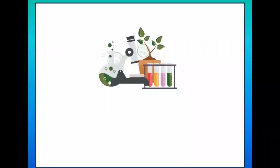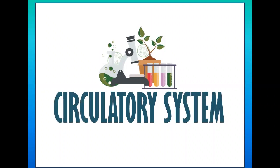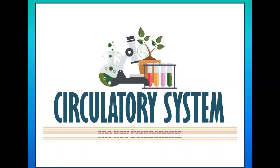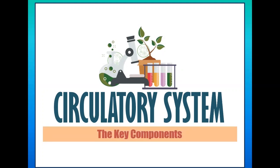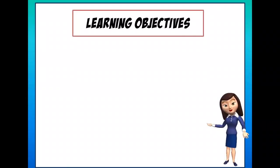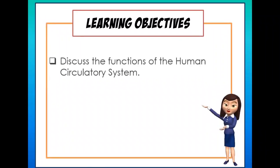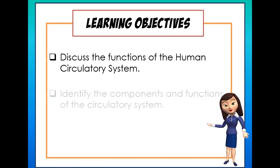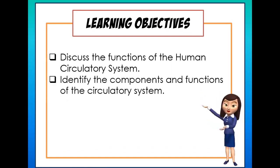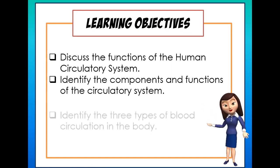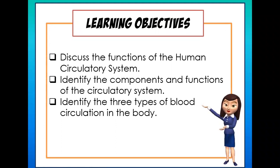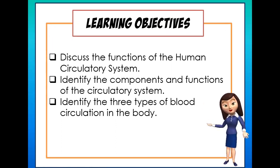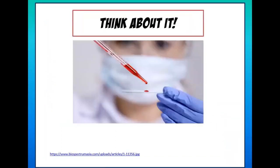Good day class. Today our topic is the human circulatory system, and to be more specific, we're going to talk about the key components. Here are the learning objectives for today's discussion: first, we are required to discuss the functions of the human circulatory system; second, identify the components and functions of the circulatory system; and third, identify the three types of blood circulation in the body.